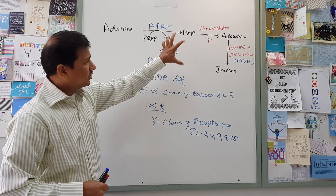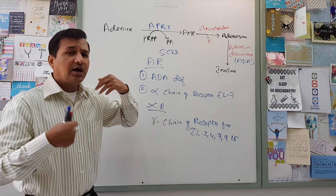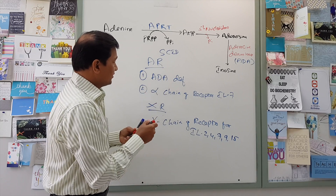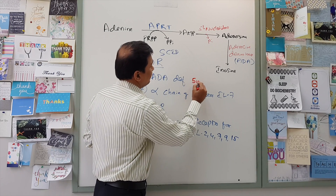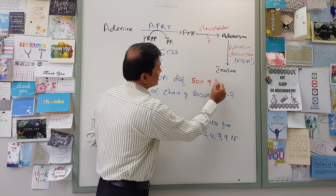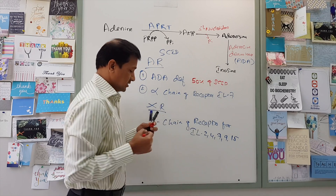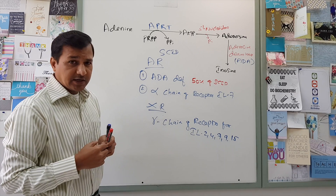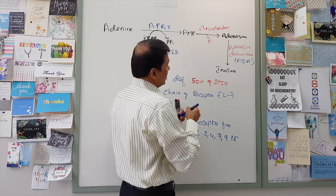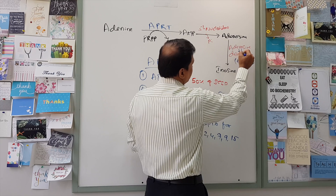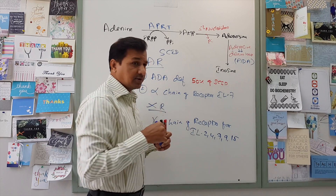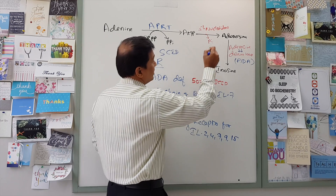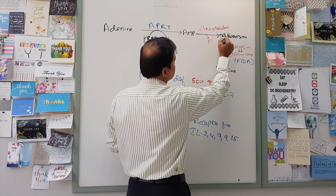Now let us see how adenosine deaminase deficiency causes SCID. Adenosine deaminase deficiency contributes to about 50% of SCID cases. When there is deficiency of ADA — meaning decreased adenosine deaminase enzyme activity — there will be an increase in adenosine, since the enzyme is not converting it.